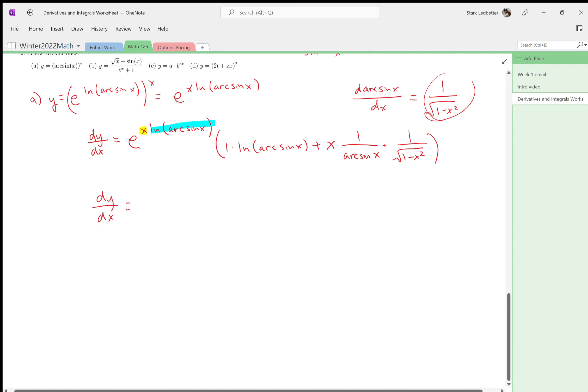And then we want to write this back in terms of the power. So e to the log arc sine x, remember, was arc sine x, so this can be written back as arc sine x to the x, and then natural log of arc sine x, plus I'm going to write x in the numerator over arc sine x times root one minus x squared.